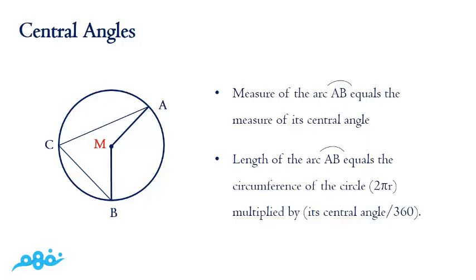About the length of this arc, the length of the arc is measured by the circumference of the circle, which here is 2πr multiplied by its central angle over 360. 360 because this is the measurement of the complete revolution.